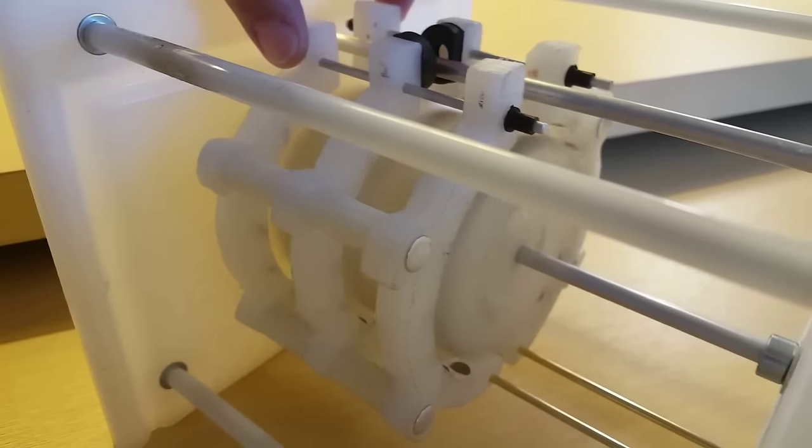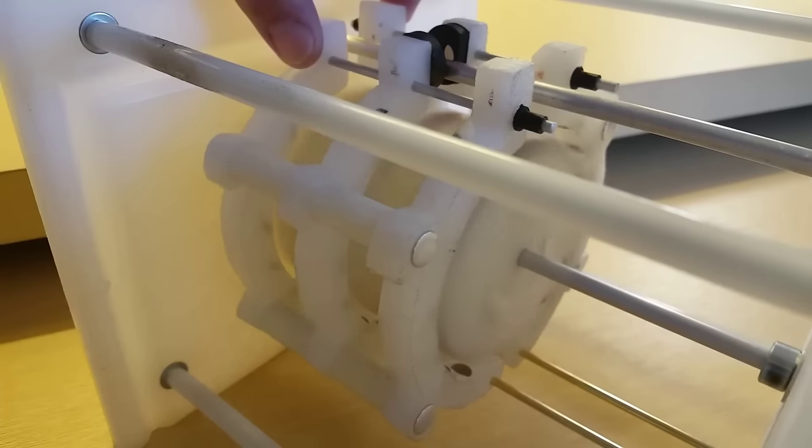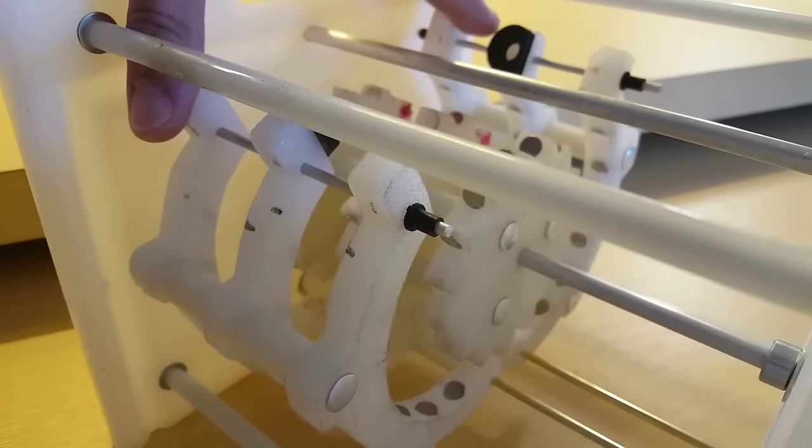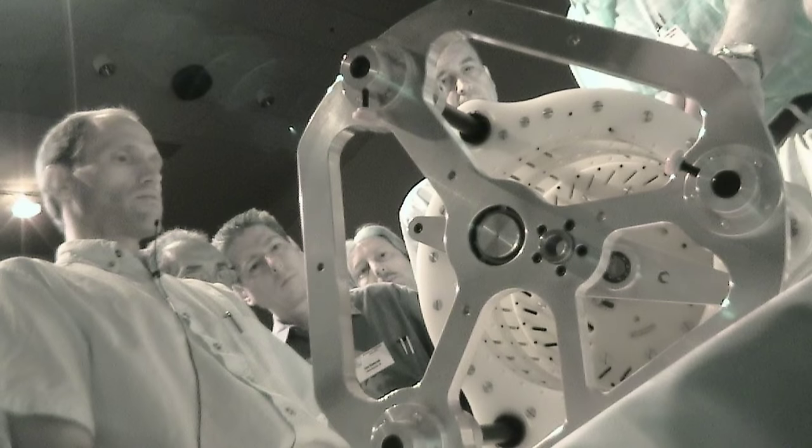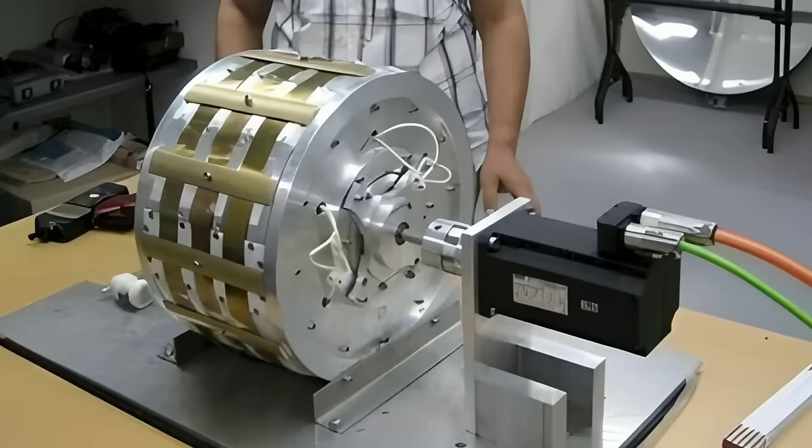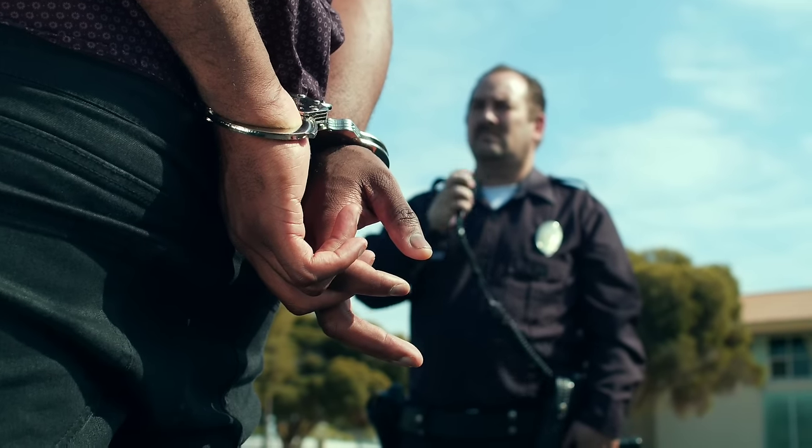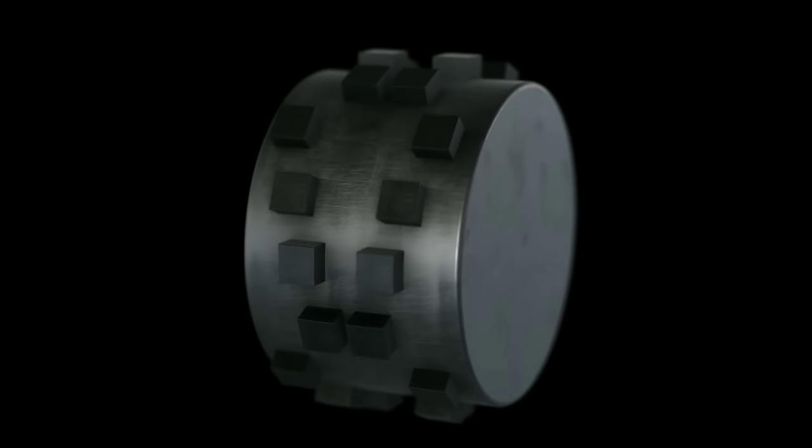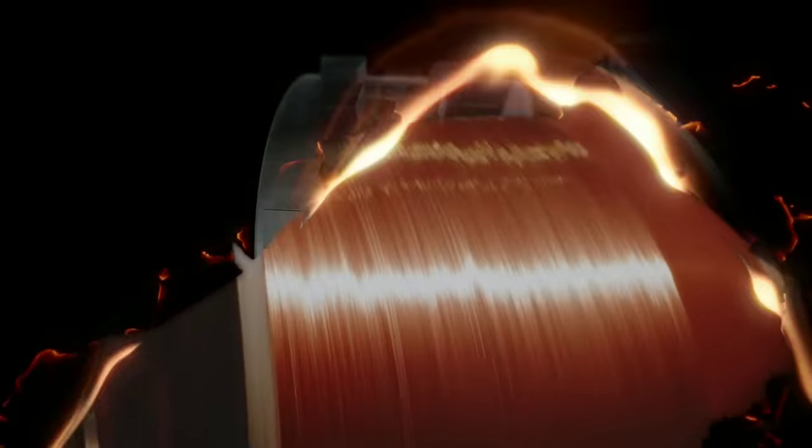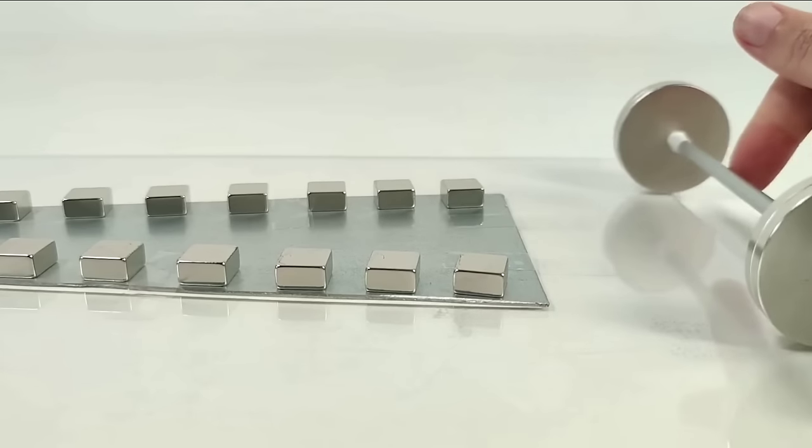The Perendiv motor works by using the magnetic force of the magnets to create a continuous motion that can power a generator and produce free electricity. The Perendiv motor is supposed to be a self-sustaining device that can run indefinitely without any input or output of energy. But does it really work? Well, not at all. The Perendiv motor is actually a fraud and a hoax. Mike Brady never demonstrated his motor in public or provided any credible evidence of its performance. He only showed videos and photos of his motor that were either fake or manipulated. He also took money from investors and customers who wanted to buy his motor, but never delivered any product or service. He was eventually arrested and charged with fraud and theft.